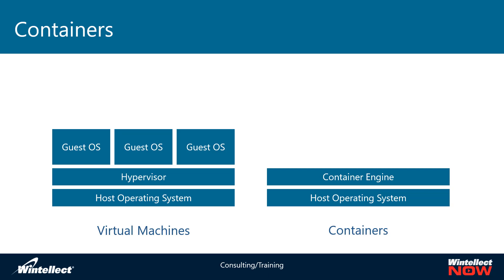This allows you to eliminate the need for a guest operating system within the context of a container, but the trade-off means that the container is inherently married to the operating system family of the host operating system. In other words, a container that runs on Linux has to be a Linux container, and a container that runs on Windows has to be a Windows container. However, a virtual machine host can be Windows and still run a Linux virtual machine. By eliminating the guest operating system, you reduce the overhead that a container needs to run.